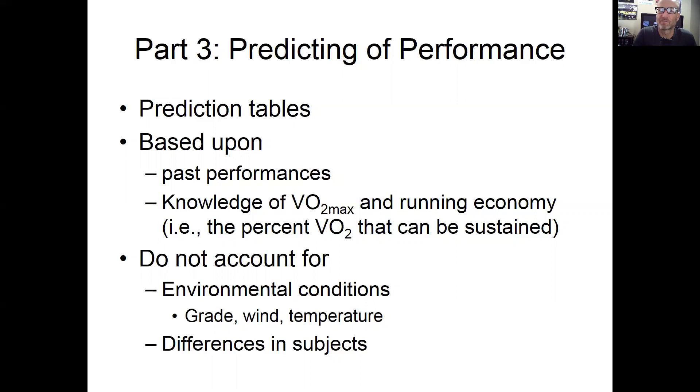The interesting thing is a lot of these prediction tables do not account for environmental conditions, grade, wind, temperature, or even differences in subjects - one runner versus another. Now there are some software packages out there that do account for environmental conditions. One that I've gone through in the past, and you may see some of this in this class, is Best Bike Split. That actually does use historical environmental data for different races - wind direction, temperature, humidity - and they build those environmental conditions into the prediction model for predicting how fast your bike split may be in an Ironman or bike race. Really neat, sophisticated algorithms.